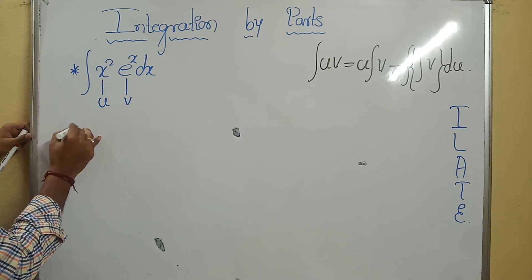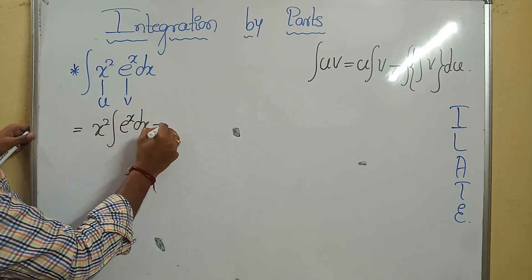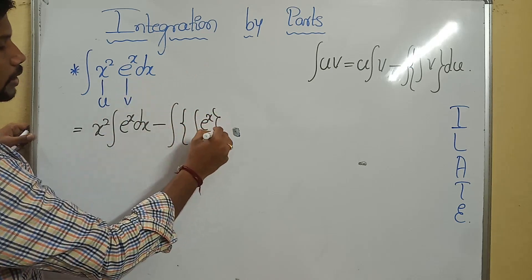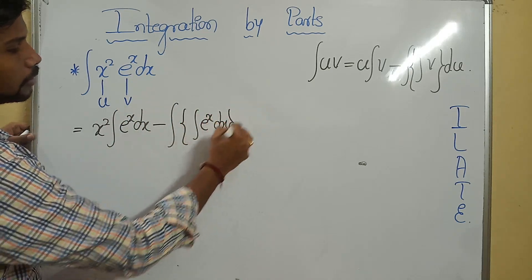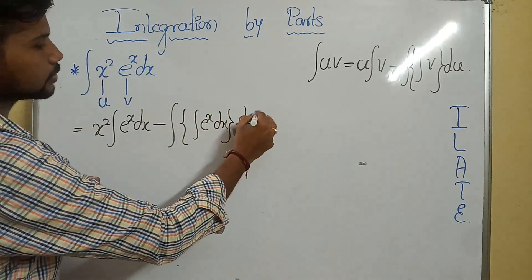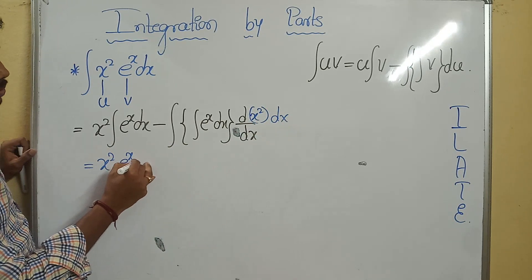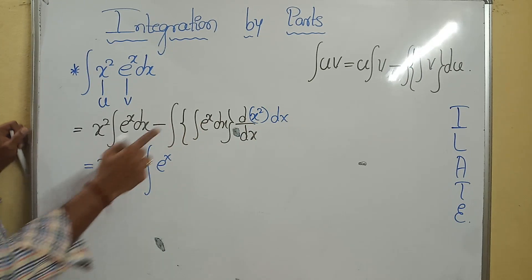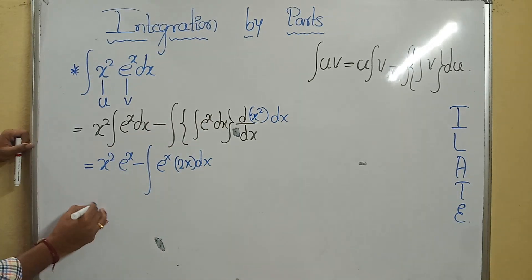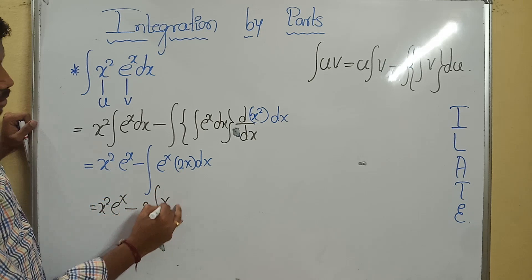For integral of x²·eˣ: x² is algebraic so it is u, eˣ is exponential so it is v. Applying the formula: x² times integral of eˣ dx, minus integral of [integral of eˣ dx] times d/dx(x²) dx. This gives x²·eˣ minus integral of eˣ times 2x dx. Then next step: x²·eˣ minus 2 times integral of x·eˣ.